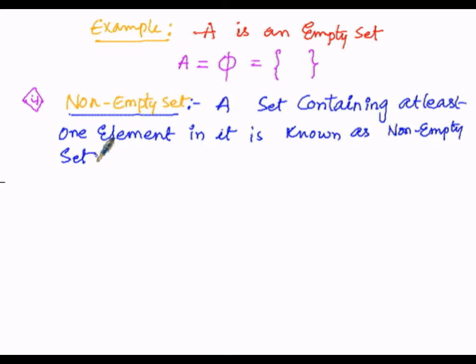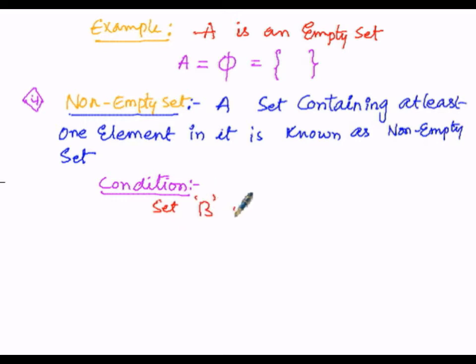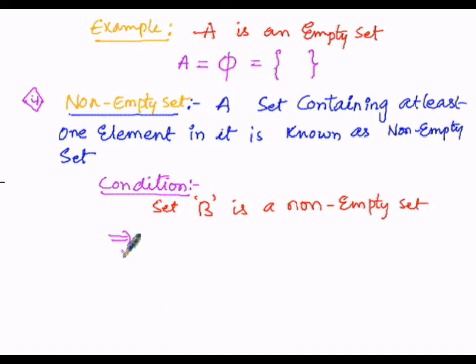Here the condition is: let B be any non-empty set. The condition for set B being a non-empty set is that if B equals {5}, we know 5 here is not an empty set — it is non-empty — that is, B is not equal to the empty set. So {5} is a non-empty set.